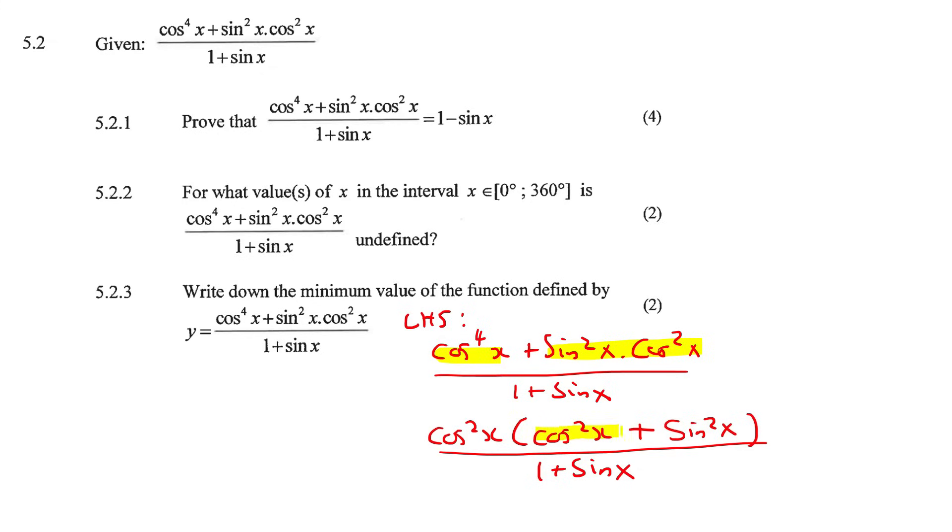Now we know that cos squared x plus sin squared x is equal to 1. So we could then write cos squared x times 1 over 1 plus sin x. Having a 1 there doesn't do anything, so this is where we're at at this moment.